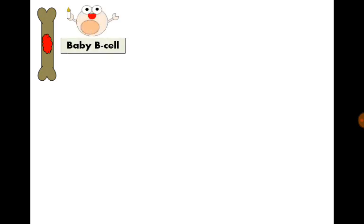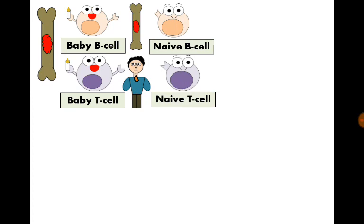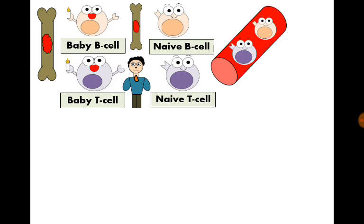Now let's tell the story of B and T cell activation. Once upon a time, the bone marrow produced a T-lymphocyte and a B-lymphocyte — still immature and unable to function. The T-lymphocyte went to the thymus gland where it became a mature T-lymphocyte, and the B-lymphocyte completed its maturation in the bone marrow. Now mature, they were released into blood, each carrying a specific receptor that can identify only one certain microbe. They went to a lymph node and waited there for that specific microbe.